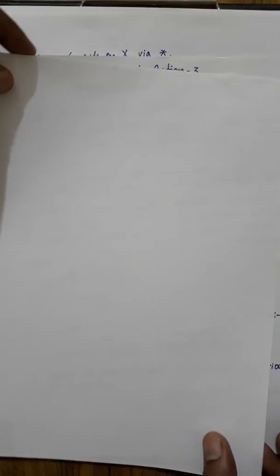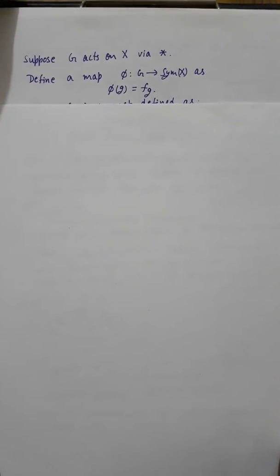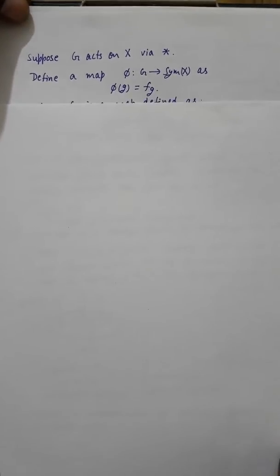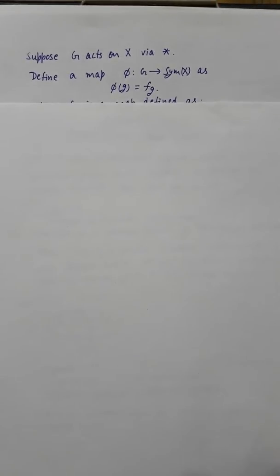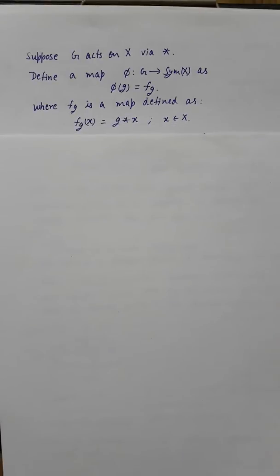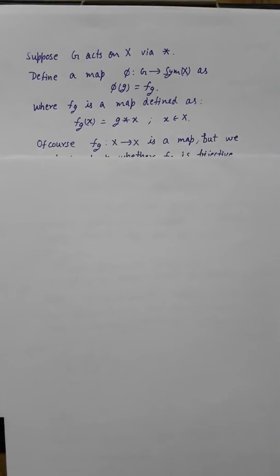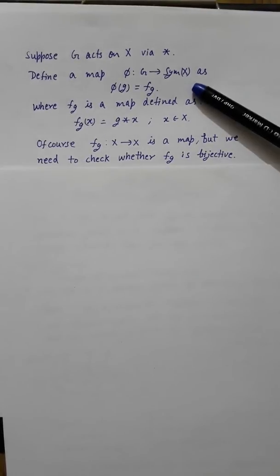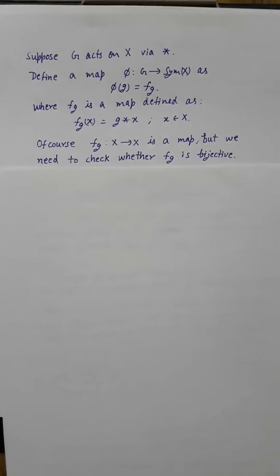Now define a map φ from G to Sym(X) as φ(g) = fg, where fg is a map defined by fg(x) = g ★ x. Of course fg is a map from X to X, but fg should be an element of Sym(X), so we need to show that fg is bijective.